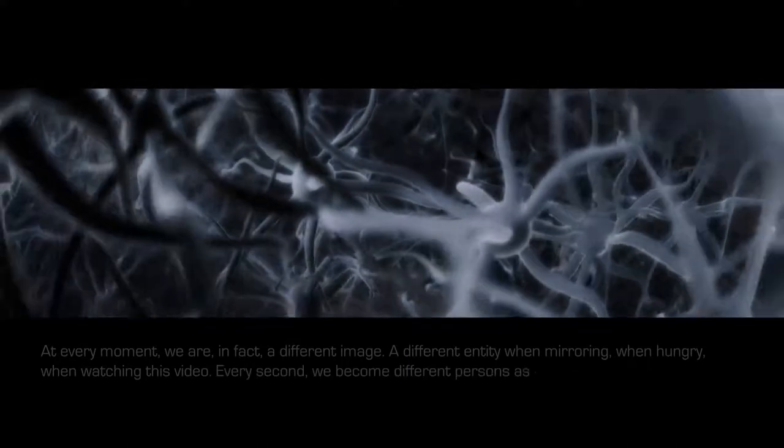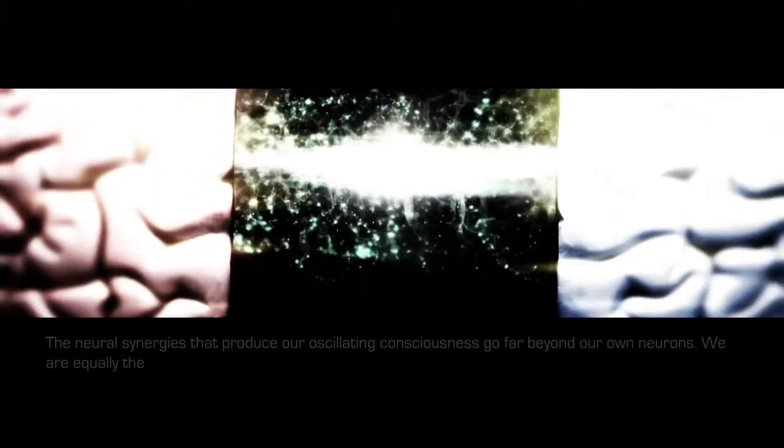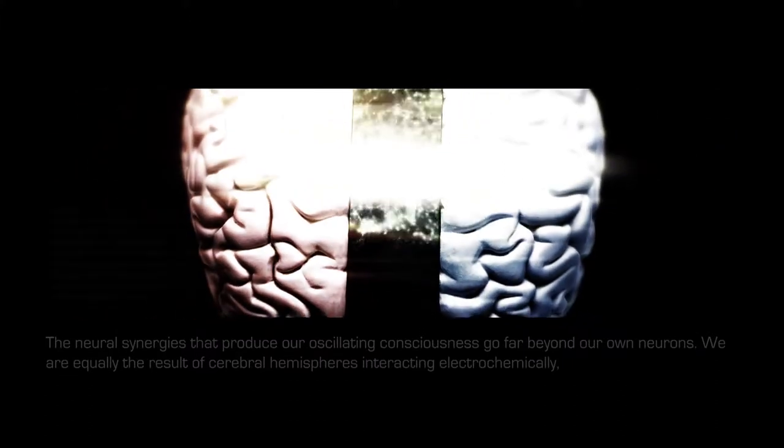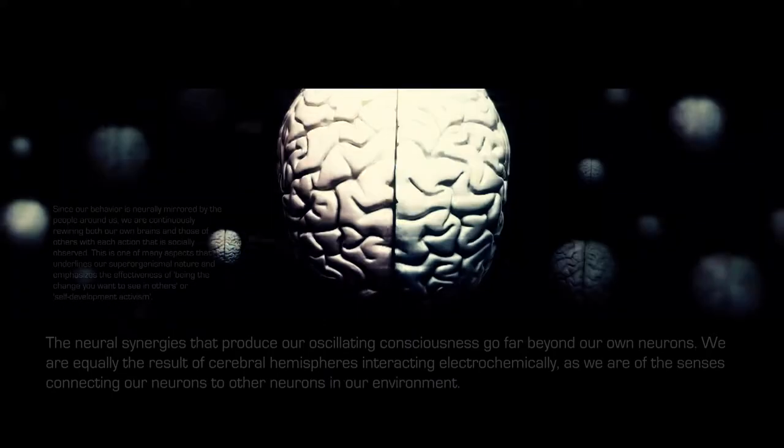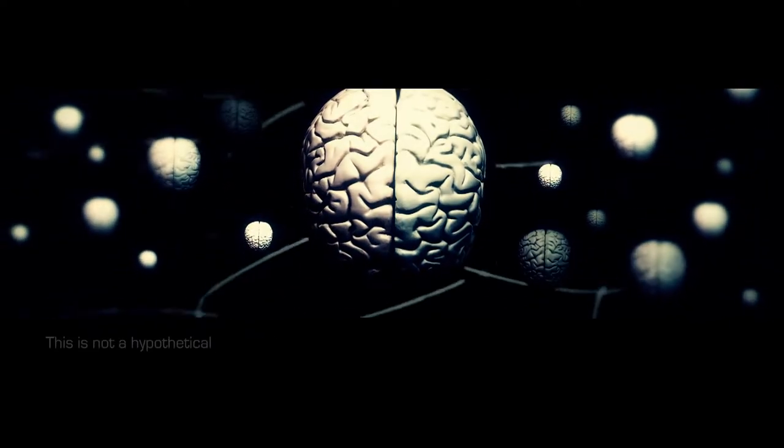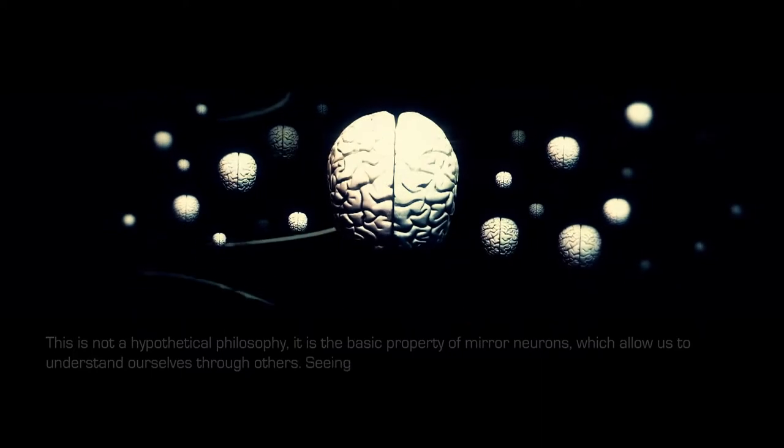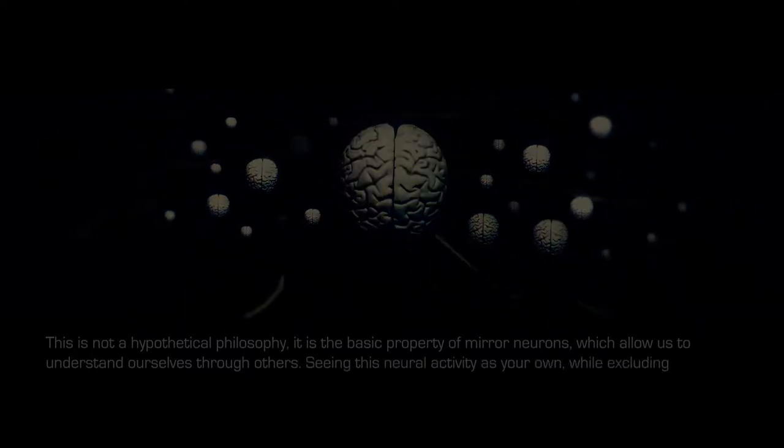Just as the pixels on a screen can express themselves as a recognizable image when in unity, the convergence of neural interaction expresses itself as consciousness. At every moment we are in fact a different image, a different entity when mirroring, when hungry, when watching this video. Every second we become different persons as we go through different states. When we use our mirror neurons to look at ourselves, we may construct the idea of identity, but if we do this with our scientific understandings, we see something completely different. The neural synergies that produce our oscillating consciousness go far beyond our own neurons.